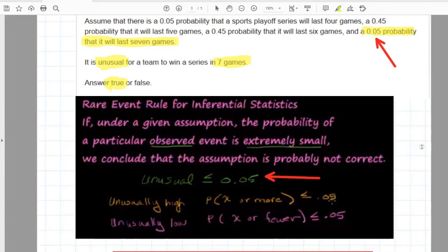so therefore this would be unusual. So the statement, it is unusual for a team to win a series in seven games, is a true statement.